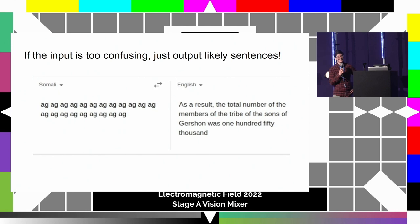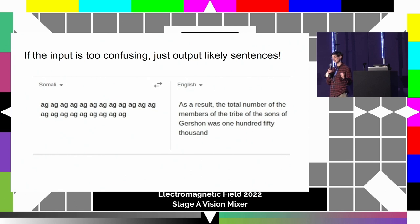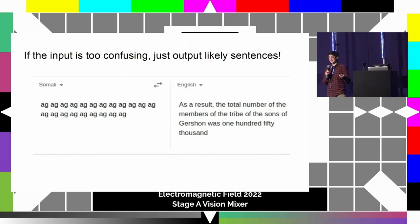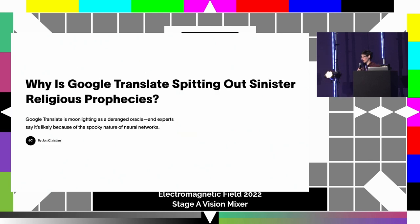This is a real problem. For a long time there was a known bug in machine translation - not just Google, generally - where if you put in complete nonsense, it would output something because it doesn't know what to do with that. It just produces a sentence that's likely in English. For very rare languages, the data that is available is the Bible. So the sentence that is likely given the training data is from the Bible, and you get some absolute nonsense. You also get probably my favorite headline of all time - not just for the phrase 'the spooky nature of neural networks,' which I think is my new band name.